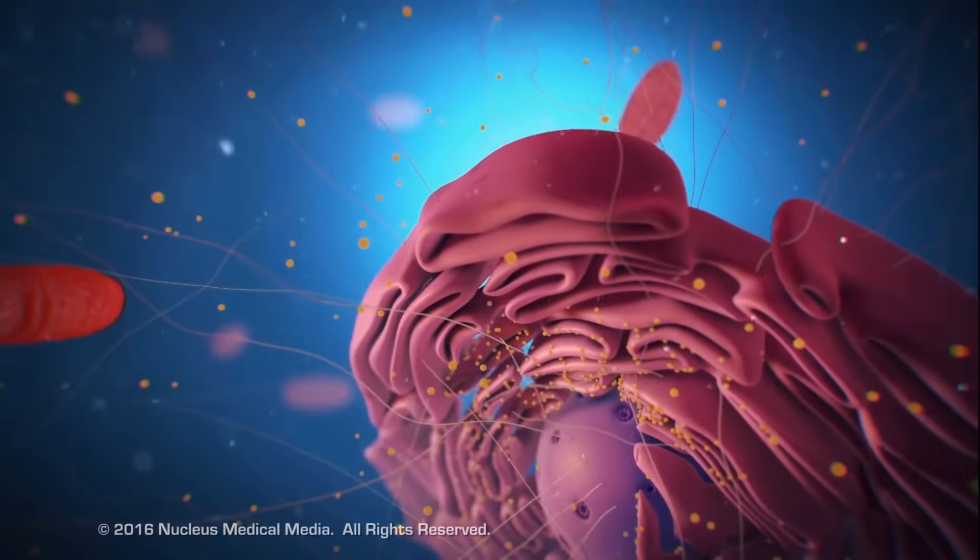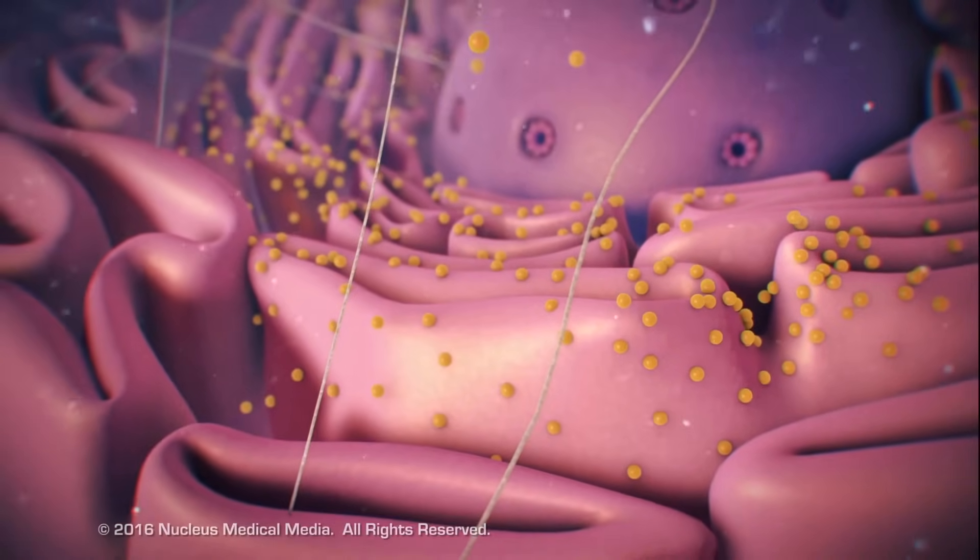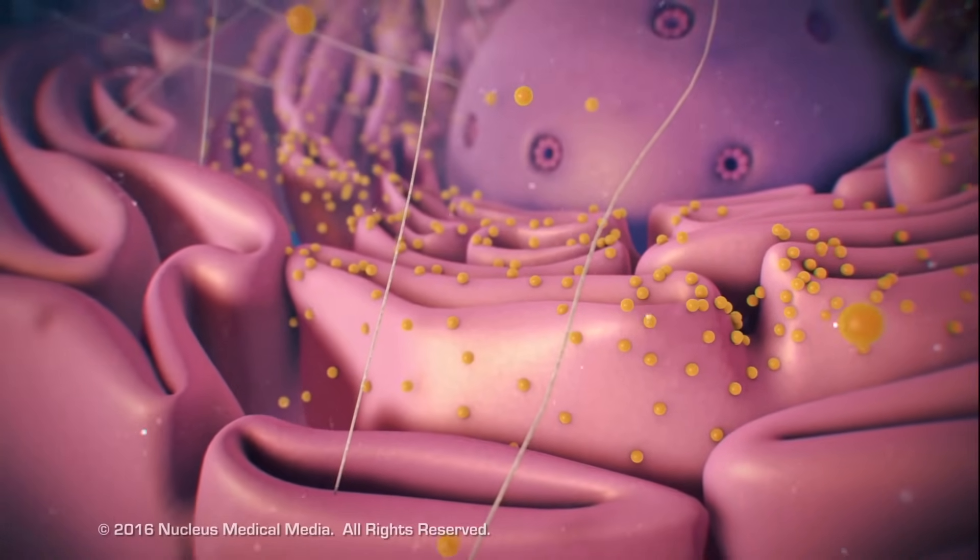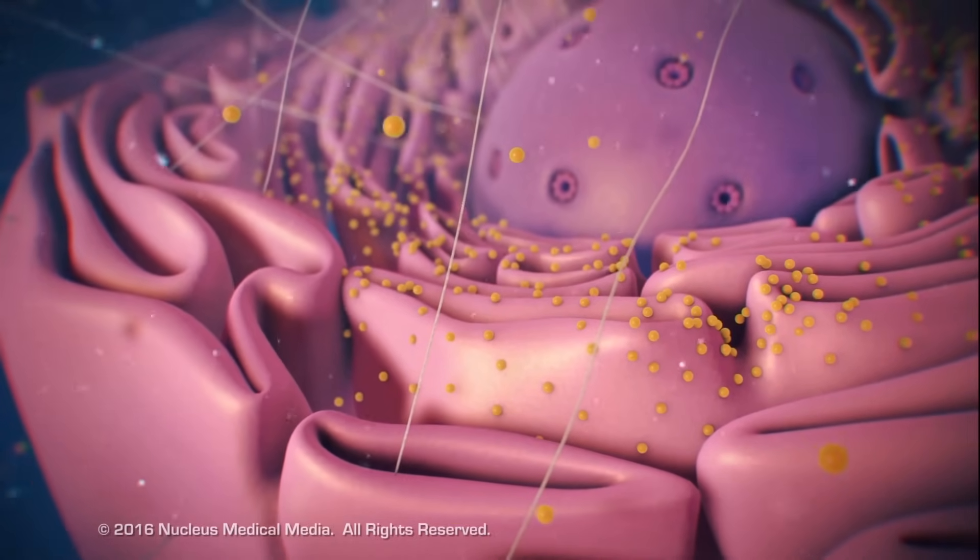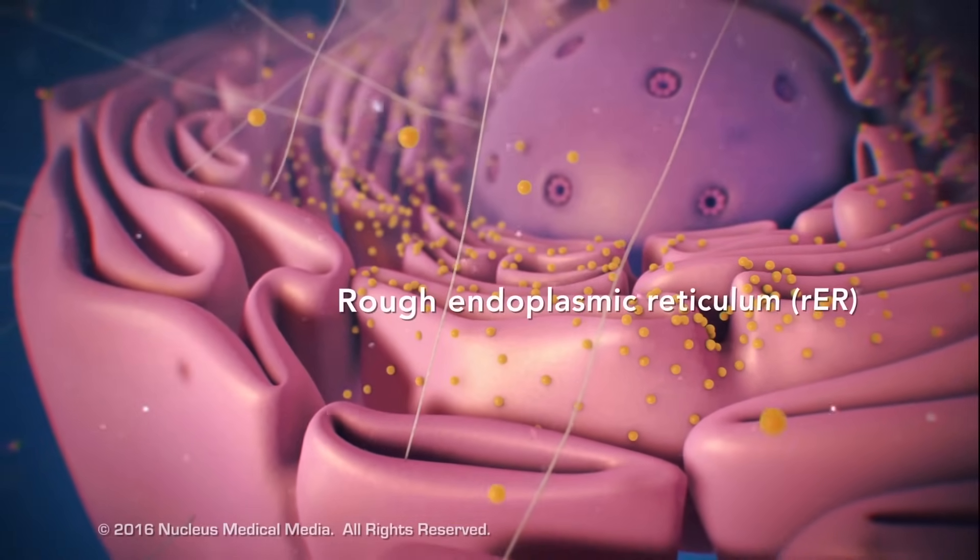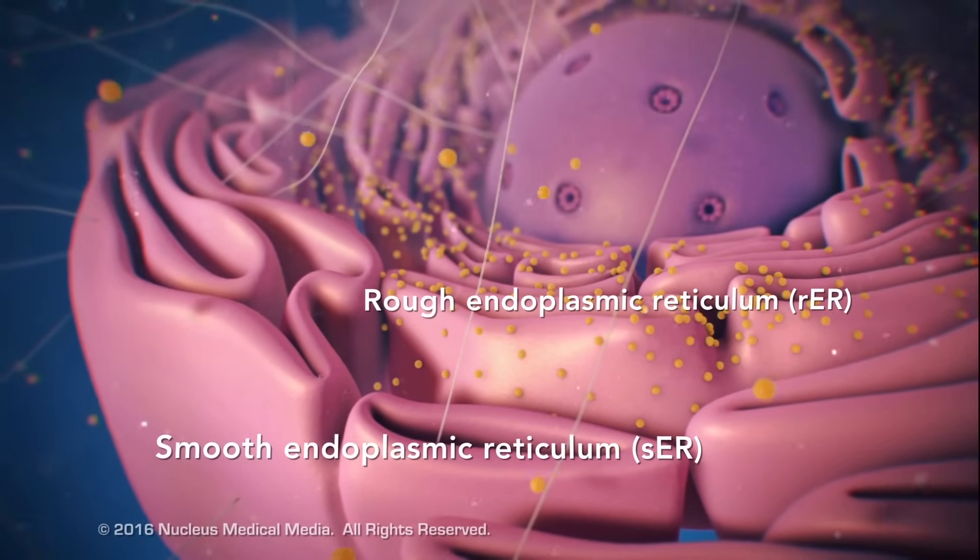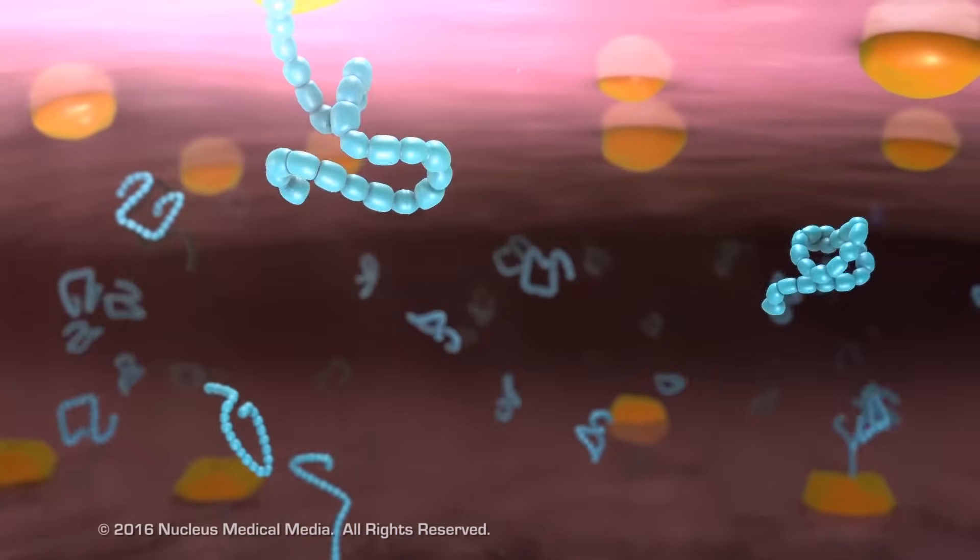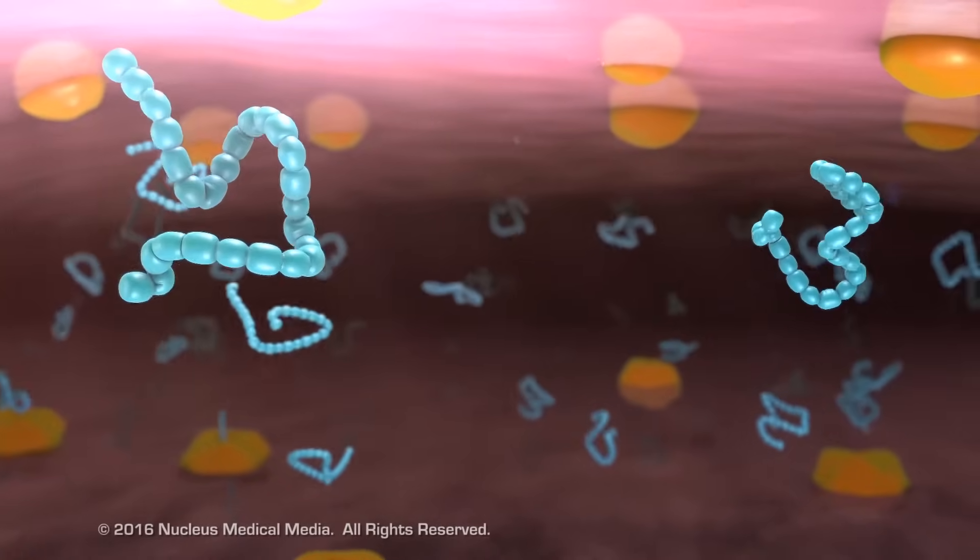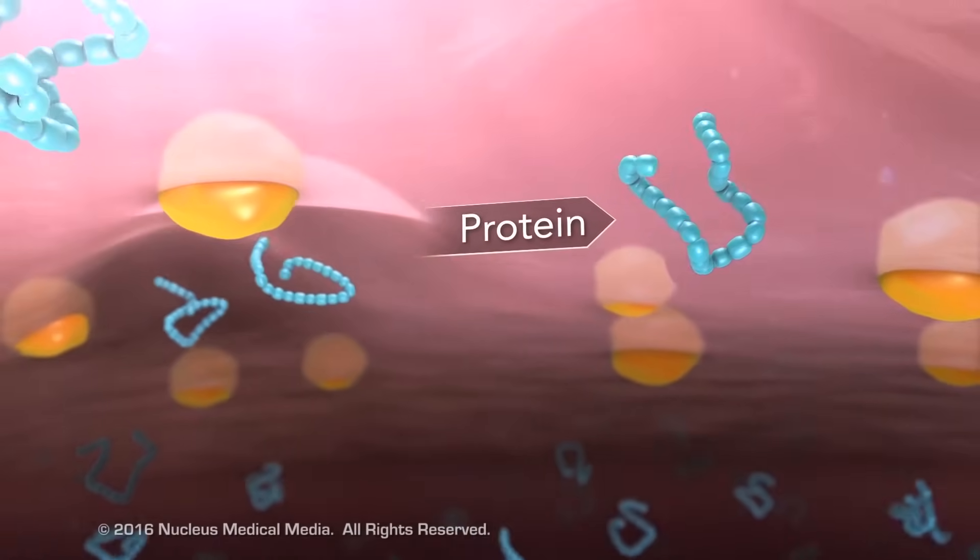Ribosomes may wander freely within the cytoplasm or attach to the endoplasmic reticulum, sometimes abbreviated as ER. There are two types of ER. Rough ER has ribosomes attached to it, and smooth ER doesn't have ribosomes attached to it. The endoplasmic reticulum is a membrane-enclosed passageway for transporting materials, such as the proteins synthesized by ribosomes.